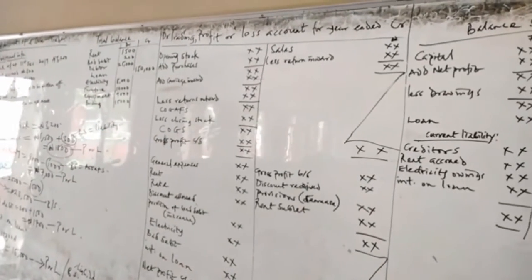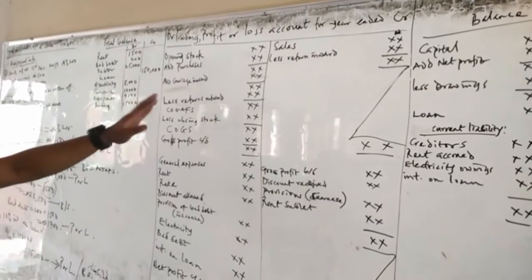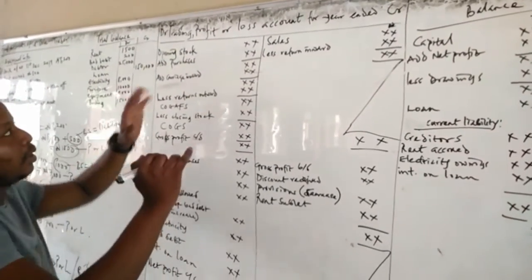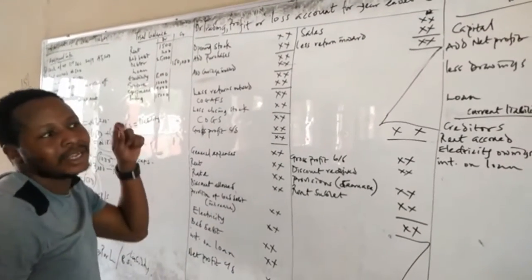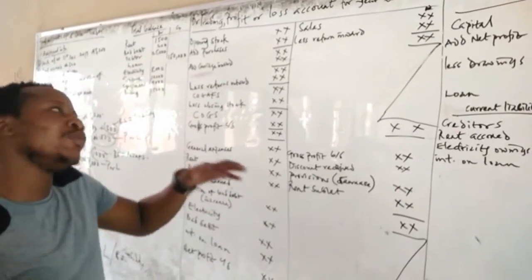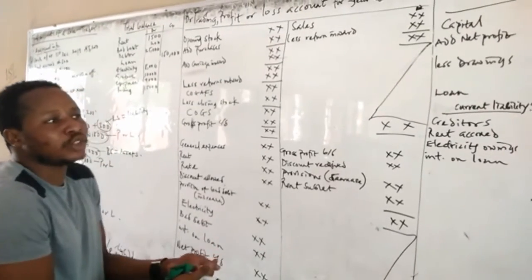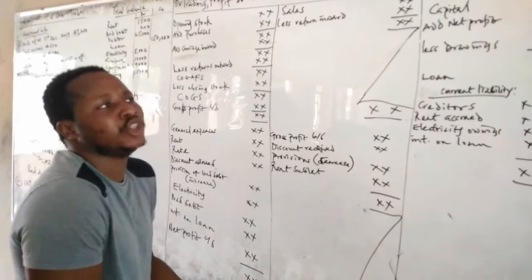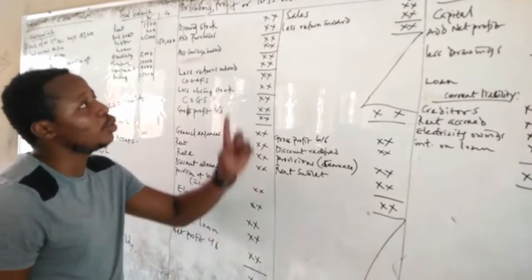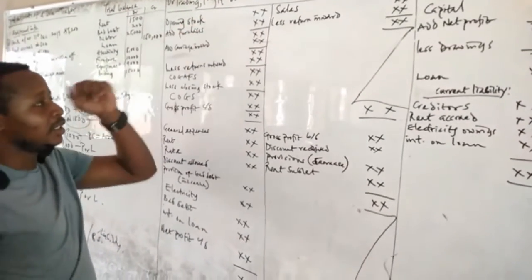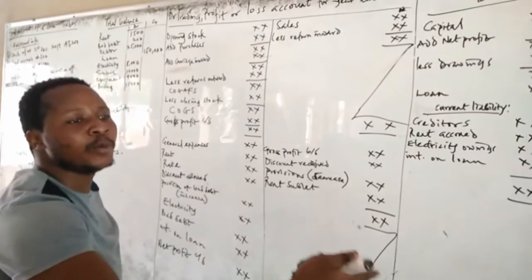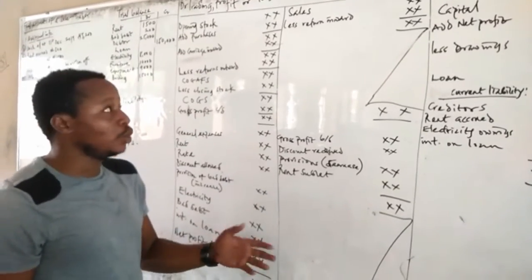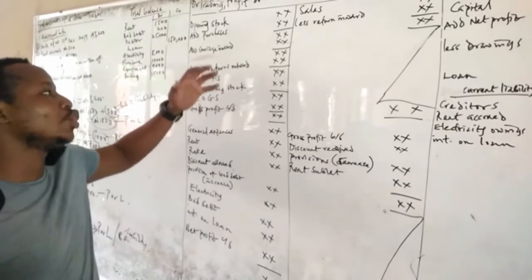Now we go straight to the trading profit or loss account. The first item is opening stock — stock brought forward from last year. Then add new purchases. Carriage inwards is the cost of transporting goods from supplier to your premises, and you add it to purchases to get the actual cost.